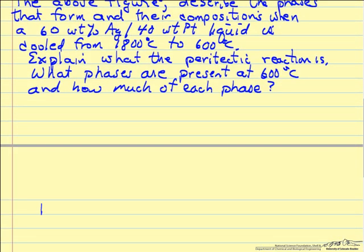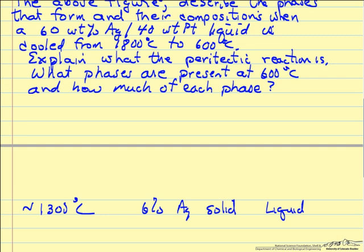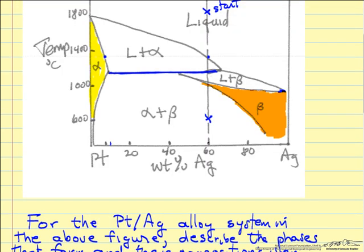So around 1300°C, we have a solid with about 6% silver and the rest platinum forming in equilibrium with the liquid. The liquid composition right at that point is 60% silver. Now as we continue to cool, the liquid composition moves along this line, and the silver content in the alpha solid also changes, slightly increasing in silver.